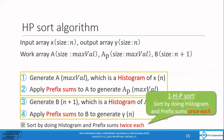The paper also describes an algorithm called one HP-sort, which sorts the data by doing histogram and prefix sums once each, provided that input data are distinct.